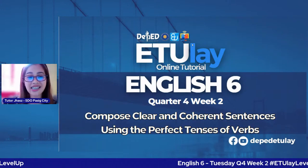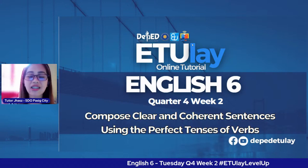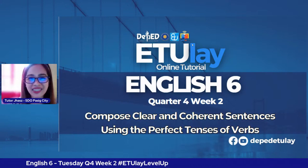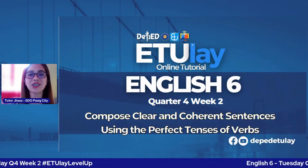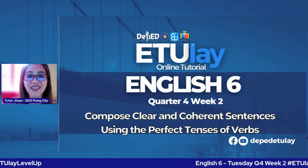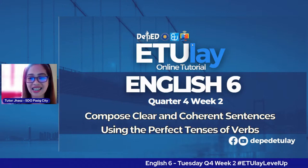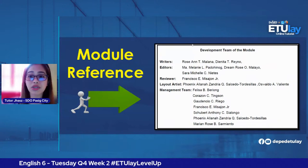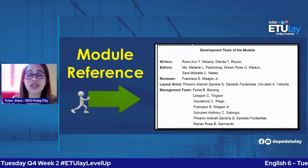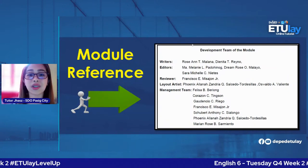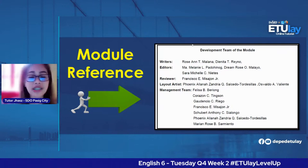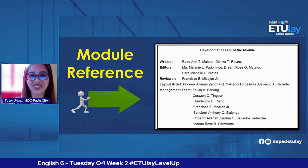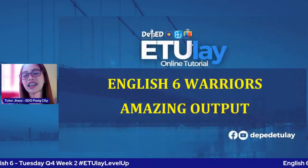Quarter Four, Week Two. Learners, let's read it aloud: compose clear and coherent sentences using the perfect tenses of the verb. So bring out your pen and your activity notebook as we do this English 6 session. Let us give credit to the development team of the module we are using — the writers, editors, reviewer, layout artist, and management team. Thank you so much for your hard work.